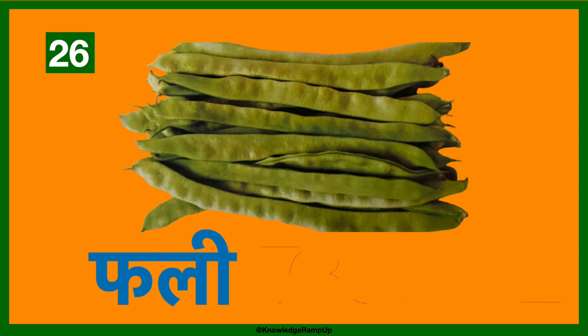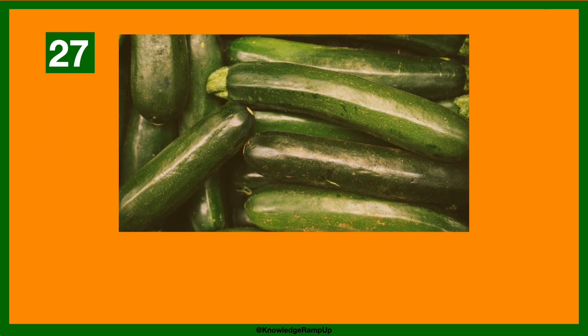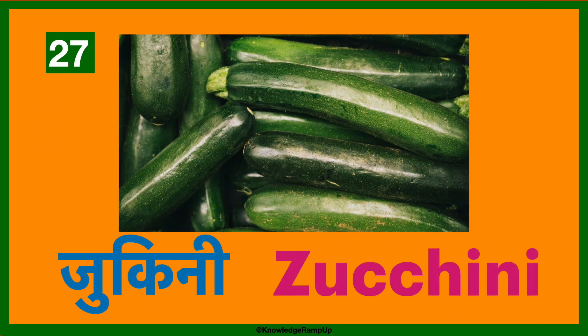Phaali — this is beans in English. Chukini — this is zucchini in English.